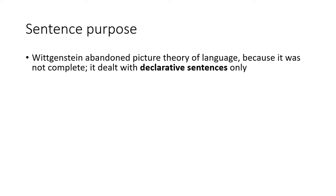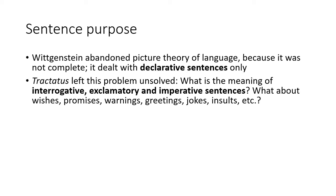There was a reason behind this change of mind. Wittgenstein abandoned picture theory of language that he presented in Tractatus, because he saw that it was not complete. He understood finally that picture theory of language dealt with declarative sentences only. Tractatus left this problem unsolved.